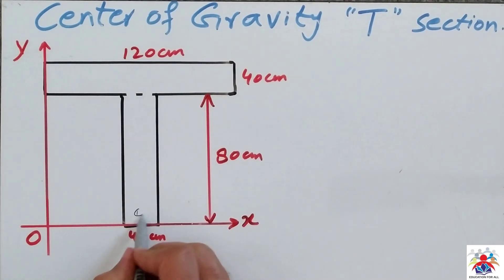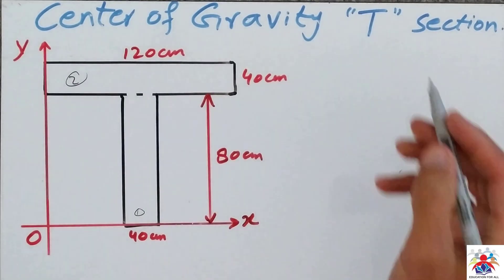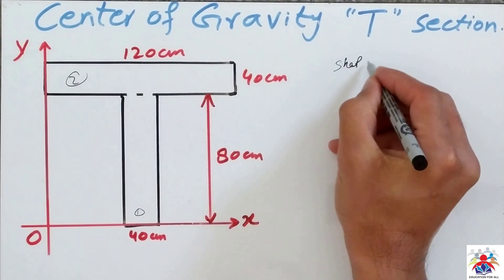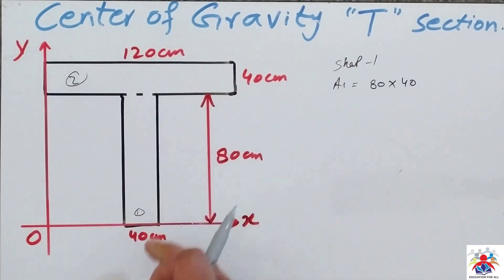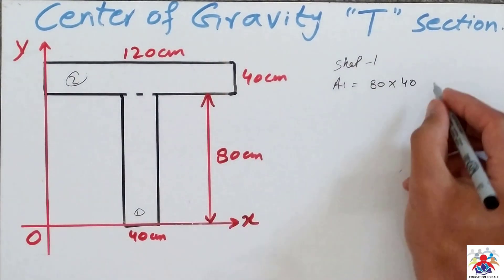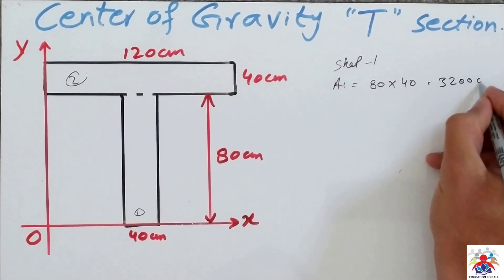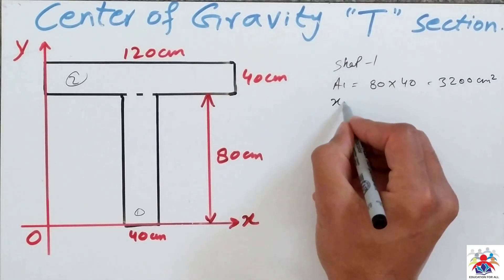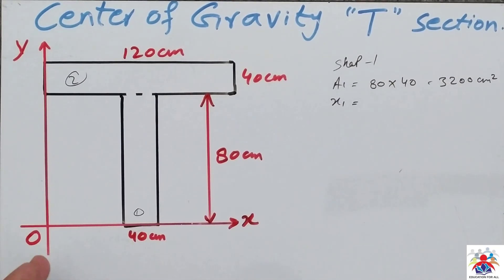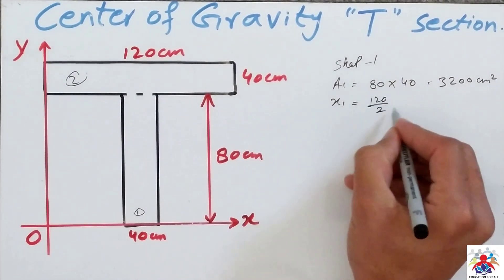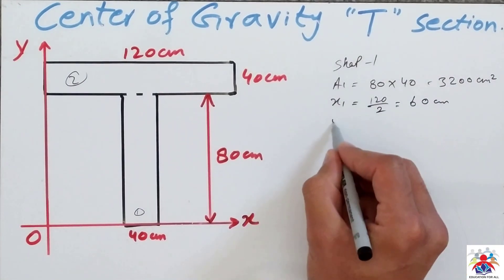This is shape one and this is shape two. Area one is going to be 80 multiplied by 40, which equals 3200 square centimeters. Then we calculate x1 — from the original point to the end is 120 centimeters, so x1 is 120 divided by 2, which equals 60 centimeters.